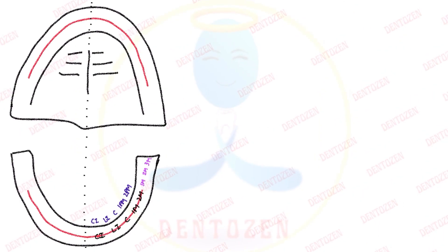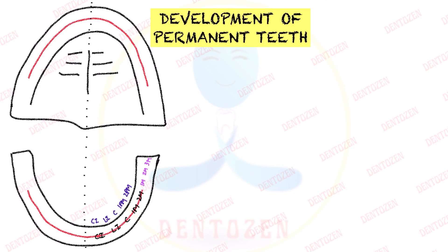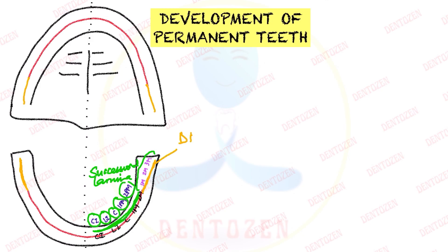Now let's see about permanent teeth. Deciduous teeth form from dental lamina — but what about permanent teeth? Dental lamina helps here too. There is a lingual extension of the dental lamina which forms what is known as successional lamina, giving rise to succedaneous teeth: permanent central incisor, lateral incisor, canine, first premolar, and second premolar. Then what about permanent molars? They form from the distal extension of dental lamina, which extends distally into the ramus region of the mandible and the tuberosity region of the maxilla, leading to formation of permanent molars.